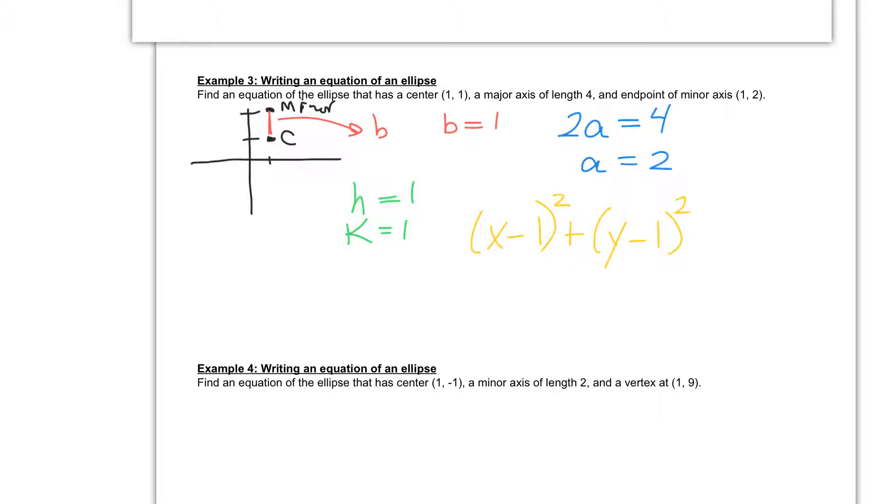And since my major axis is horizontal, my A value is going to go under my X, and I'm going to square that to make it 4. And my B squared is going to go underneath my Y's. 1 squared is just 1, and this is all set equal to 1.